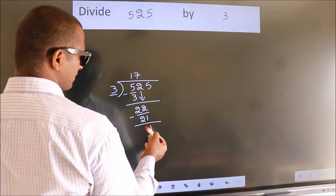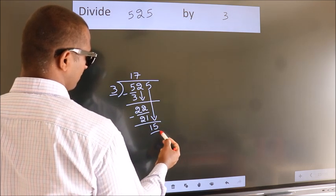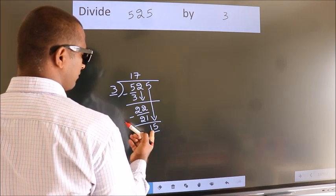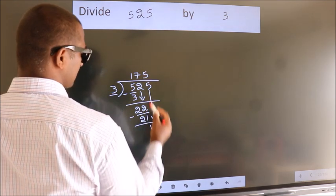After this, bring down the beside number. So 5 down. So 15. When do we get 15? In 3 table. 3 fives 15.